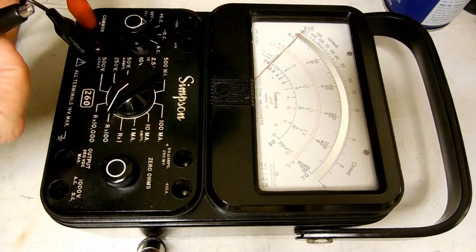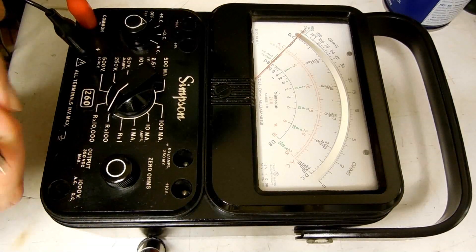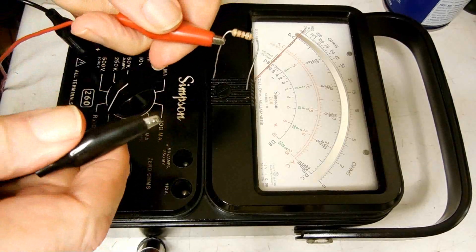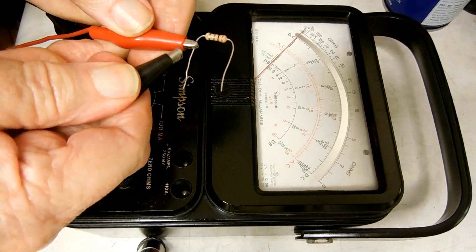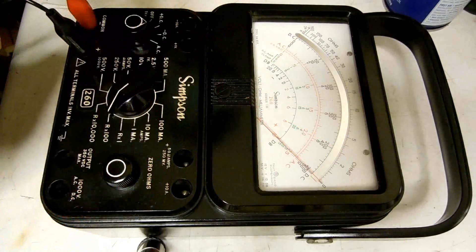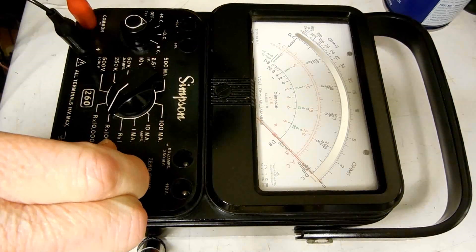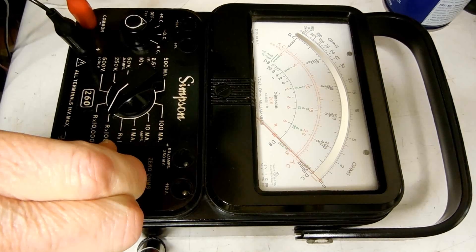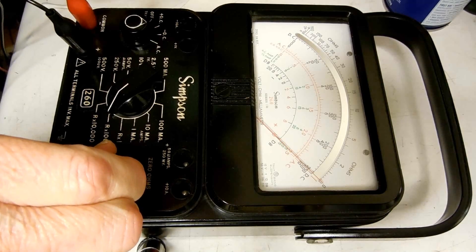Here I'm setting the meter up to measure ohms and I've got it on the 100 scale and I found a 100 ohm resistor and the meter is still very accurate. That's why I didn't want to move any of the calibration at all.